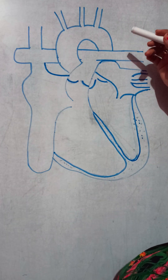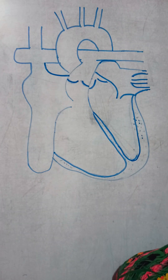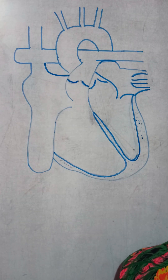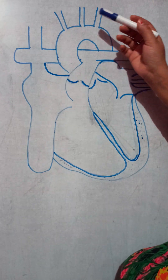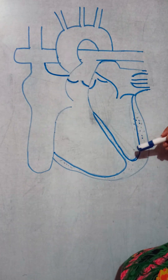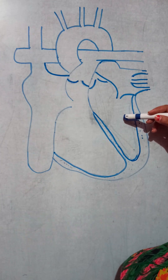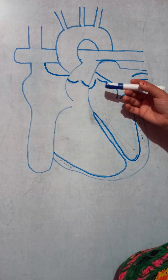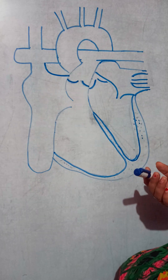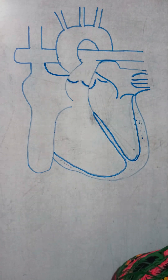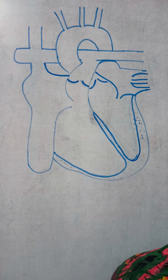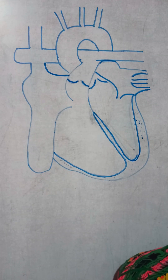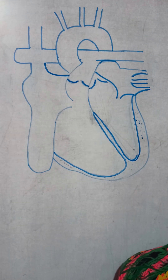Hello students, today I'm going to explain the human heart. Here you can see the diagram of the human heart. The heart is located towards the left side of our body and it weighs around 300 grams only.